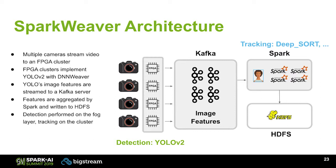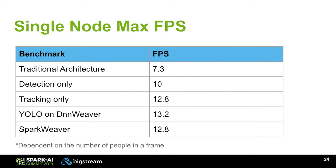Here are some preliminary numbers on our internal data set. Running on a single node with the normal architecture — running everything: Kafka, Spark, and the neural networks — we were getting 7.3 frames per second. However, with the Spark Weaver architecture, we got 12.8 frames per second, without modifying the code at all, using just the vanilla implementations of these neural networks. What happens is that detection and tracking now run in parallel; the speed is determined by the slower of those two parts, which is tracking. Running YOLO on our FPGA was a little bit higher, so our overall frame rate is now higher.